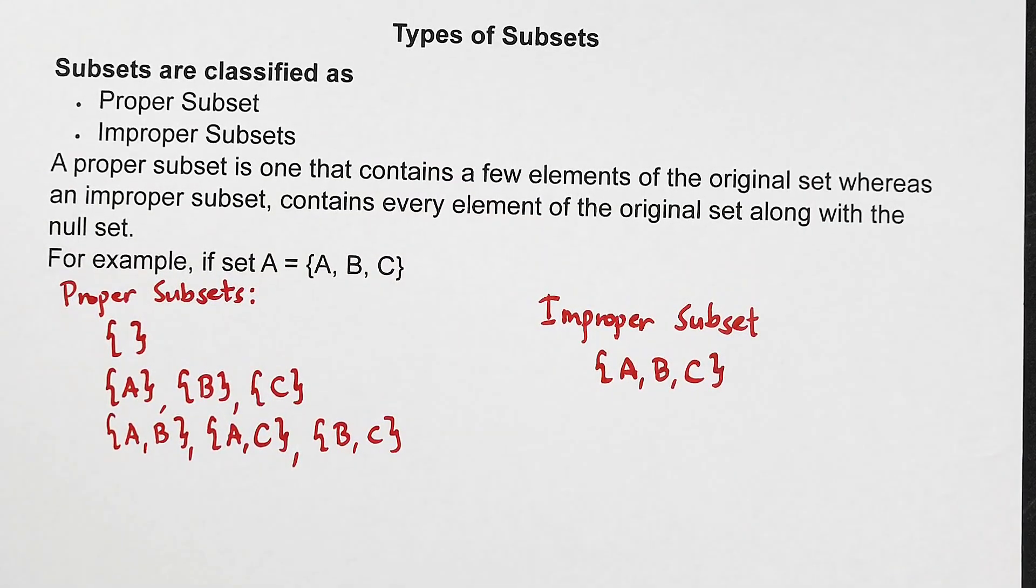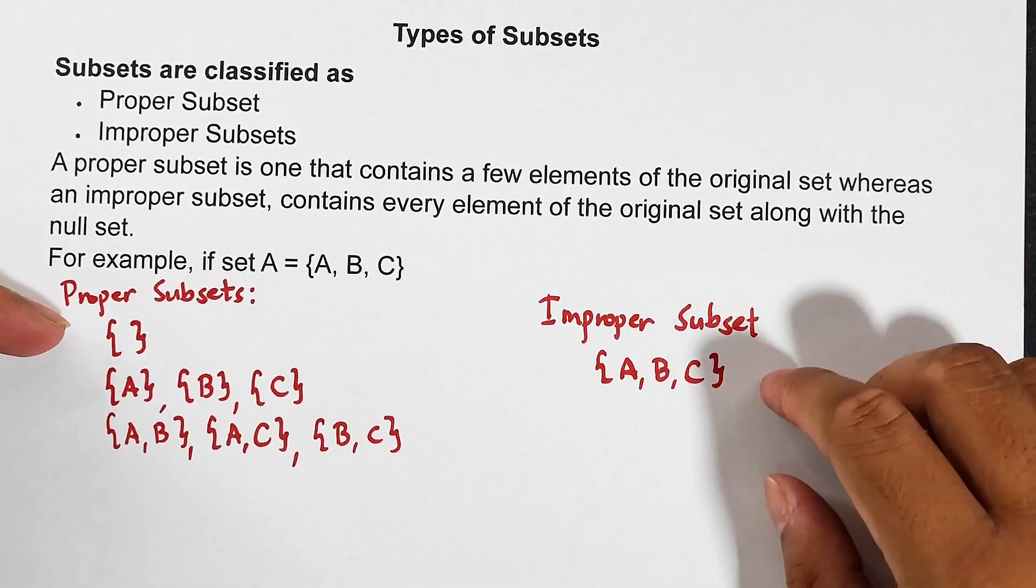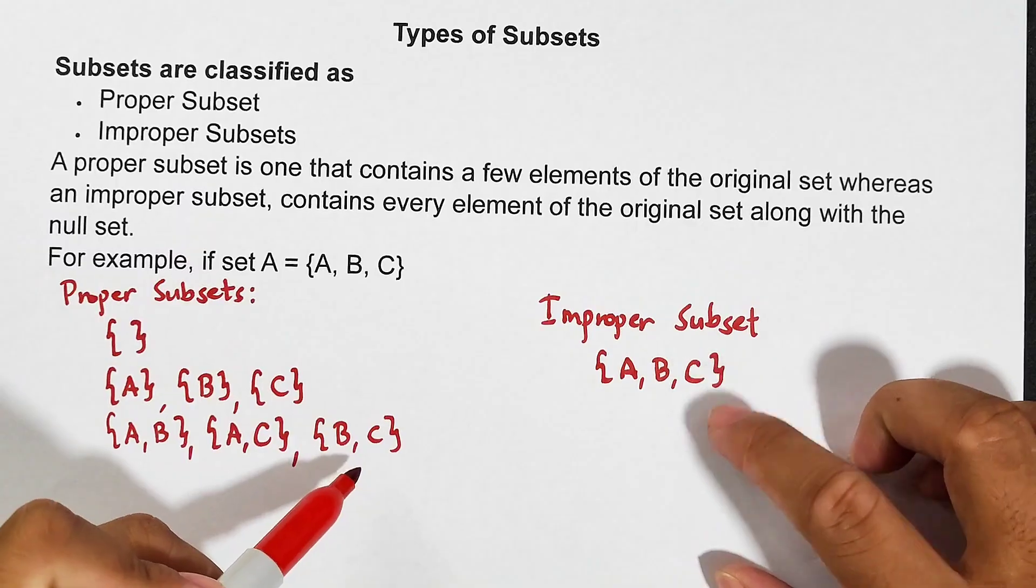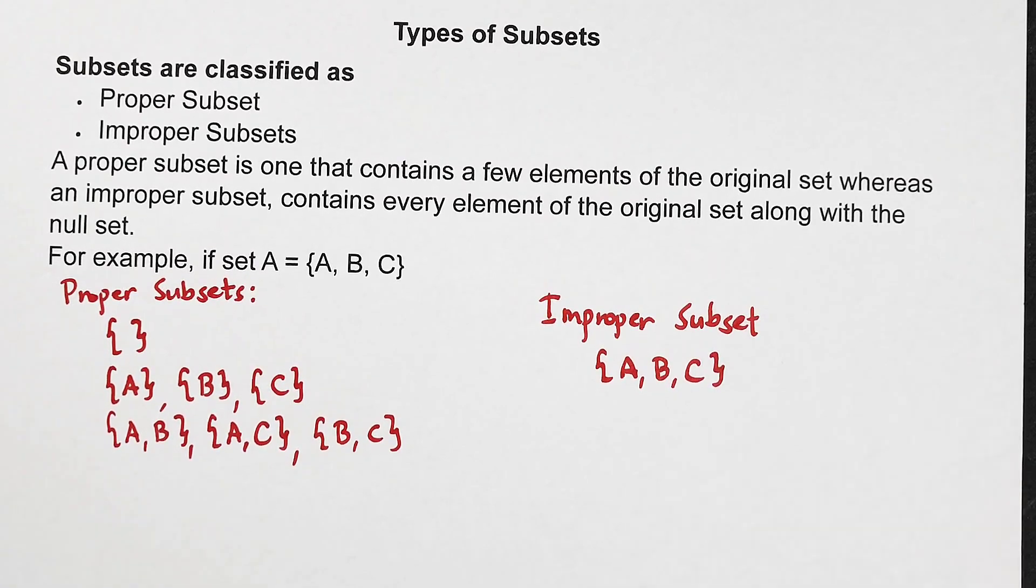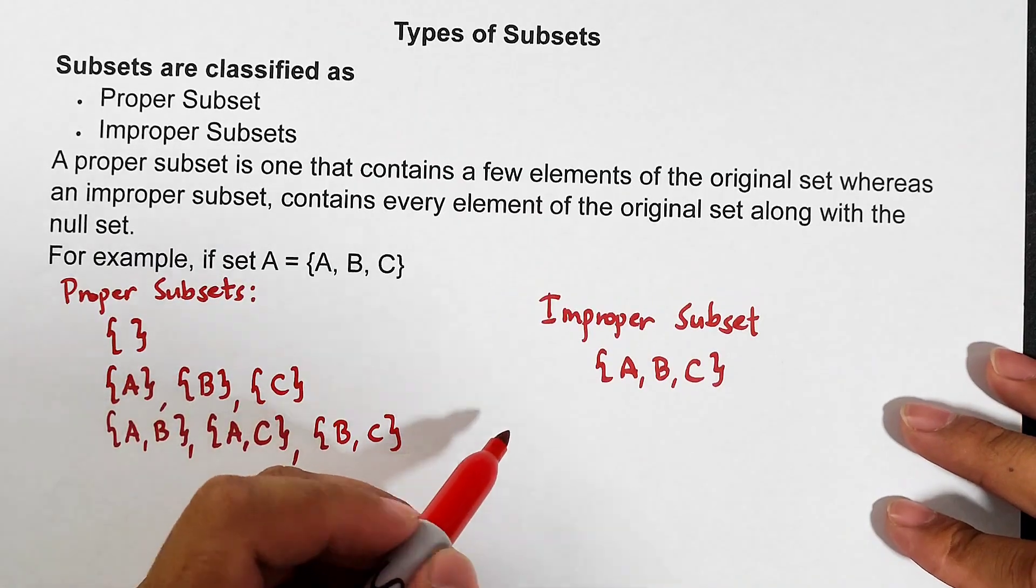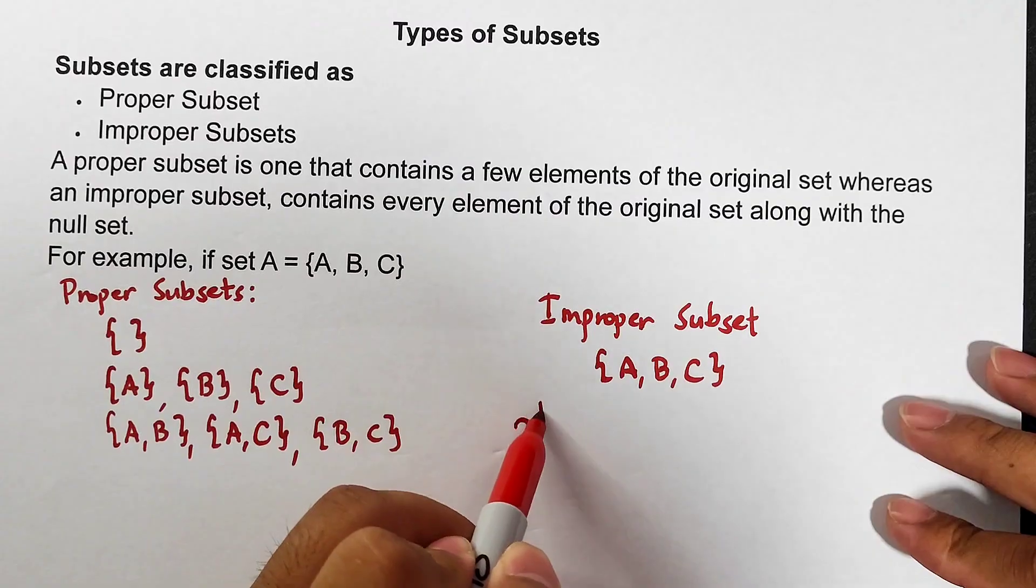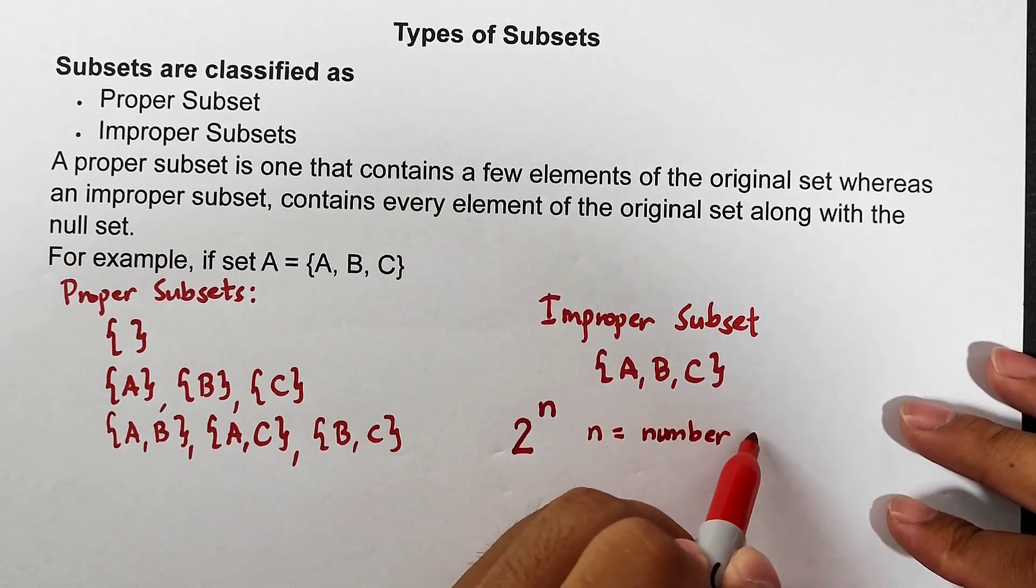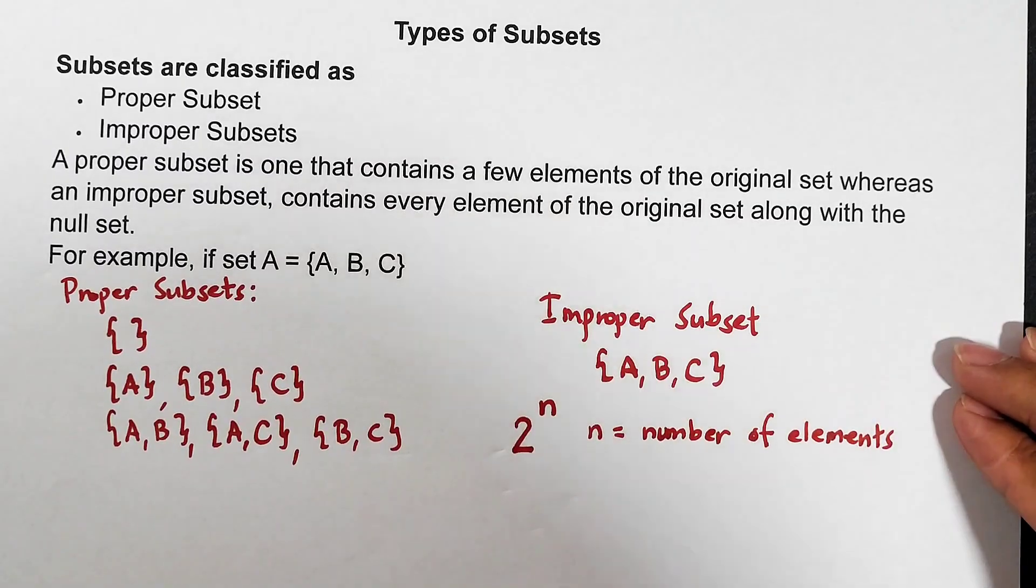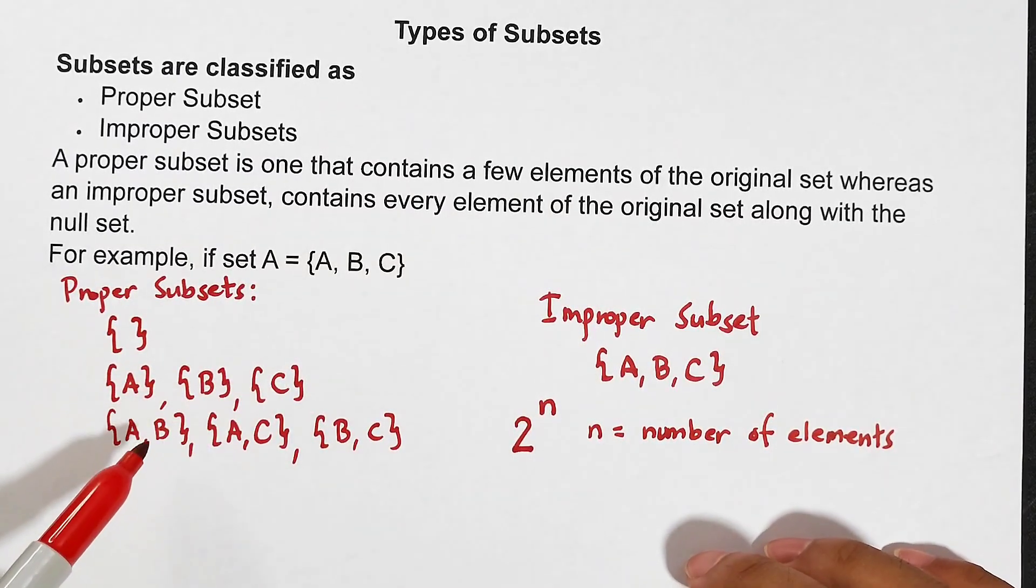The reason is we only have three elements. The three-element subset is the improper. It will only be proper if the subset has fewer elements compared to our original set. So we have A, B, and C. Now another thing I will teach you here is how to know how many total subsets a given set has. As you can see, when we combine the proper and improper, we have one, two, three, four, five, six, seven, eight subsets. What if the question asks: how many subsets do we have in a given set wherein the elements are five or six elements? It will take you time to solve or list all of them. So we have a formula. Formula for the number of subsets including improper is: we use the formula 2 raised to n, where n is equal to the number of elements.